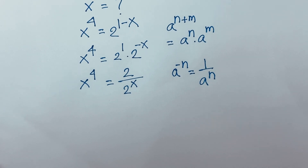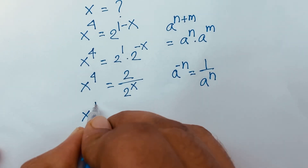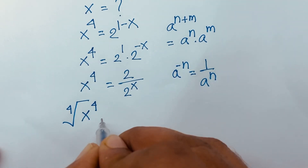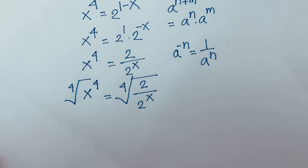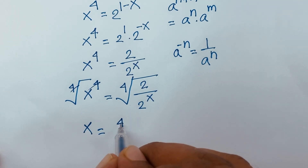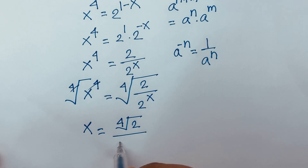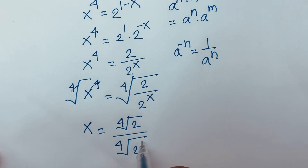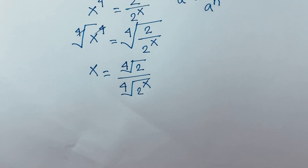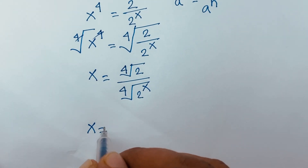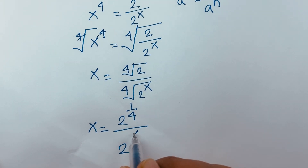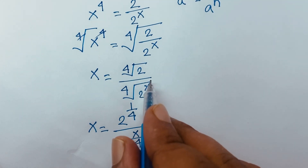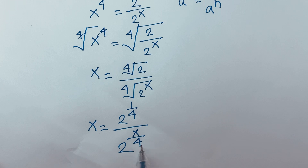At this moment, if I use the 4th root on both sides, then I can say easily this cancels. We will find out x is equal to the 4th root of 2 over the 4th root of 2 to the power x. Then x is equal to 2 to the power 1 over 4, divided by 2 to the power x over 4. Because the 4th root of 2 to the power x is 2 to the power x over 4.